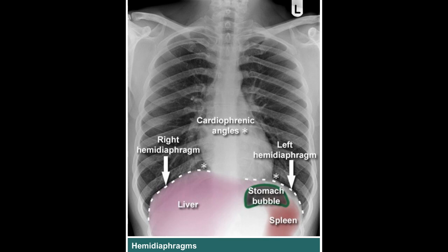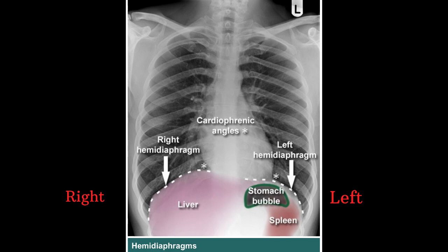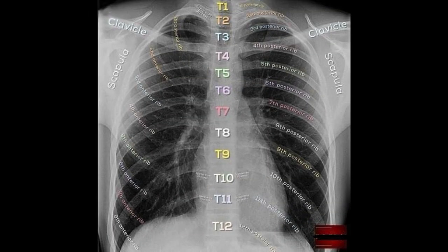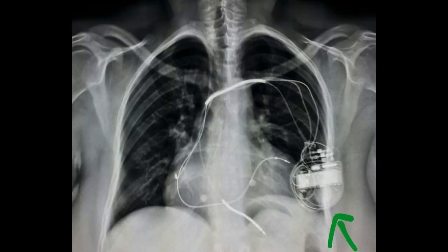Next, check the diaphragm. The right dome of the diaphragm should be slightly higher than the left. The costophrenic angle should be sharp, and there should be no free air under the diaphragm. For bones, check for any fractures in the ribs, clavicle, scapula, or spine. Soft tissue should be normal. In female chest X-rays, shadows of the breast and sometimes the nipple may be visible. There should be no subcutaneous emphysema and no foreign devices — though in patients with a pacemaker, the pacemaker leads will be visible on the chest X-ray.